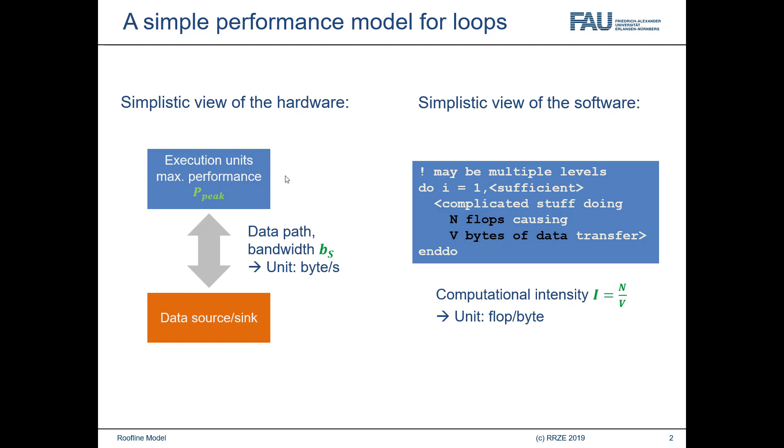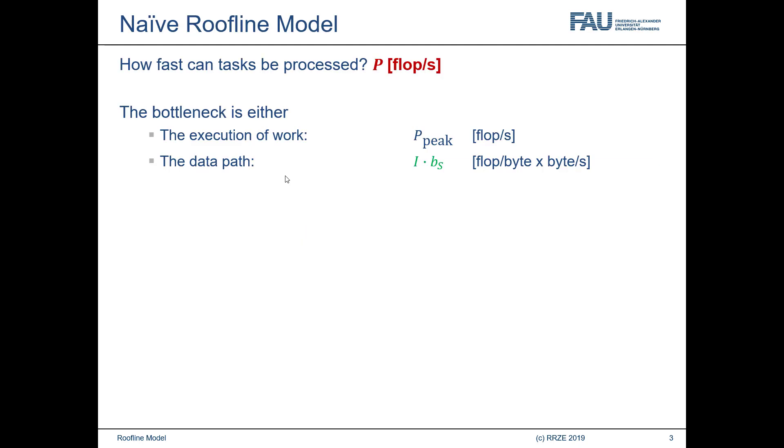Now, if flop is not the metric you need because you're not doing flops in your code, or your metric of work is something else, something more adapted to the program, then you can do that. It could be n lattice site updates, or n inner solver iterations, or n problems to solve, whatever. Whatever is useful as a metric of work you can use in your computational intensity. And accordingly, the unit of i could, instead of flop per byte, also be lattice site updates per byte, or iterations per byte.